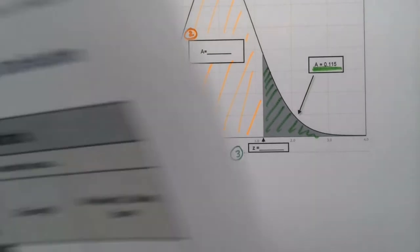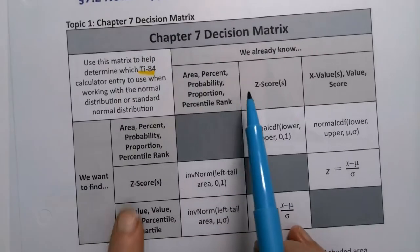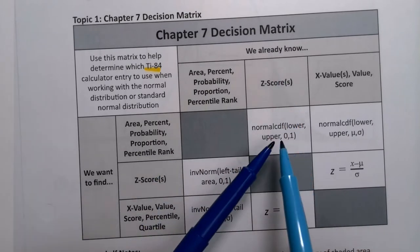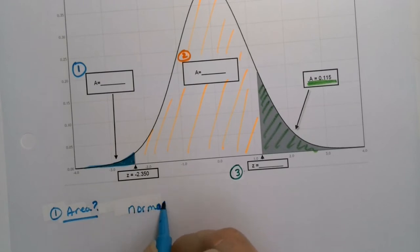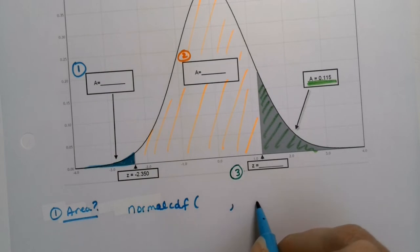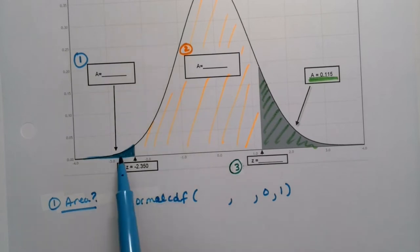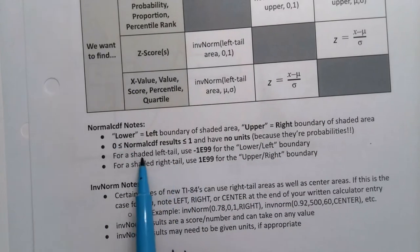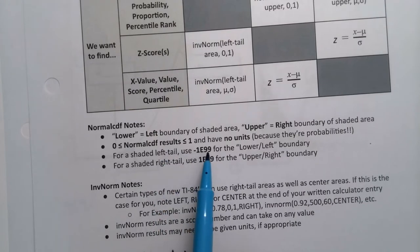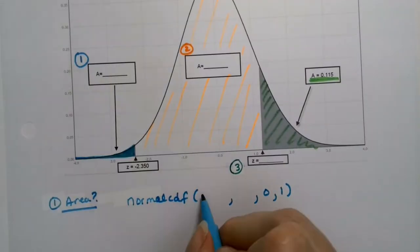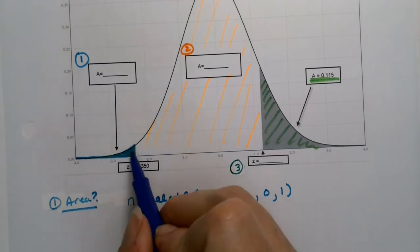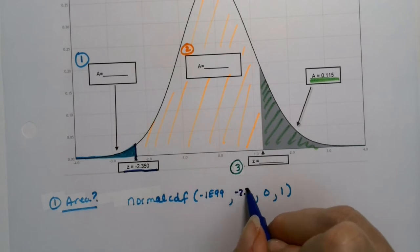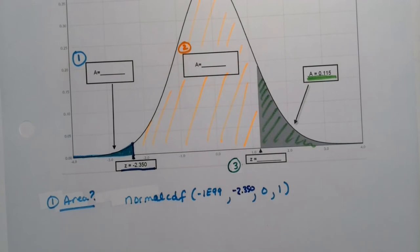Number one, I want to find that area. I already know a z-score and I want to find an area. Z-score and area means I'm going to be using normalCDF lower, upper, comma zero, comma one. The lower edge goes to forever over here, so we use negative 1E99 for that lower left-hand boundary, standing in place for negative infinity. The upper edge that I shaded is right here, which is this z-score at negative 2.350.